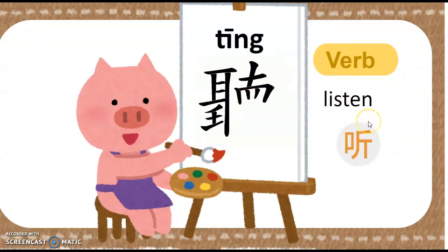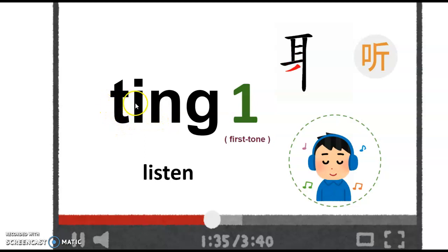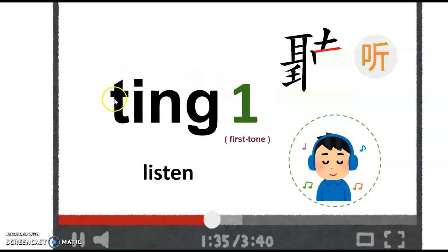Great job! Okay, this is the tone form. So let's read the pings together. 听。 This is first tone, so we write it down as number one. So let's read it again. 听。